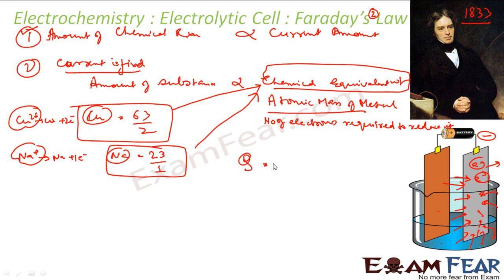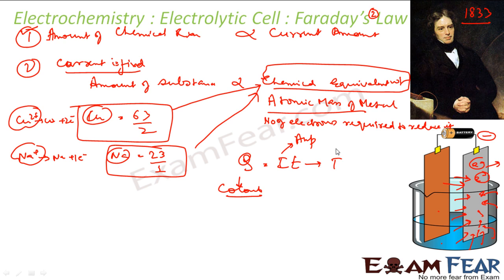Faraday also gave the formula Q = IT, where Q is the charge or amount of electricity in Coulombs, I is the current in amperes, and T is the time in seconds.